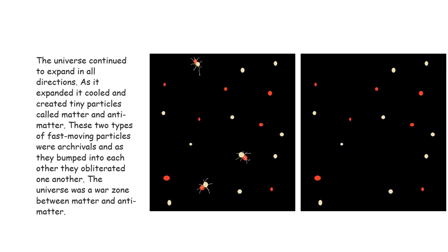The universe continued to expand in all directions. As it expanded, it cooled and created tiny particles called matter and antimatter. These two types of fast-moving particles were archrivals, and as they bumped into each other, they obliterated one another. The universe was a war zone between matter and antimatter.